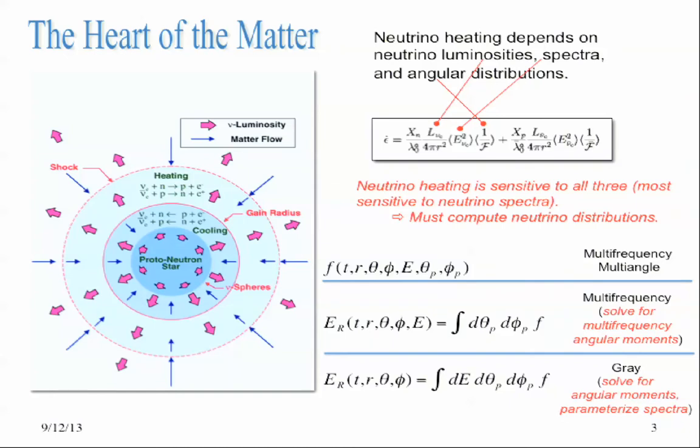And then finally, the inverse flux factor. The inverse flux factor is a measure of the isotropy of the neutrino radiation field. Here at a point, at an instant of time at a spatial point, the neutrinos are not all propagating in one direction. The more isotropic the distribution of neutrinos, the more time the neutrinos spend in the heating region. And intuitively, the more heating you get. So these three quantities have to be computed. And they have to be computed quite accurately.